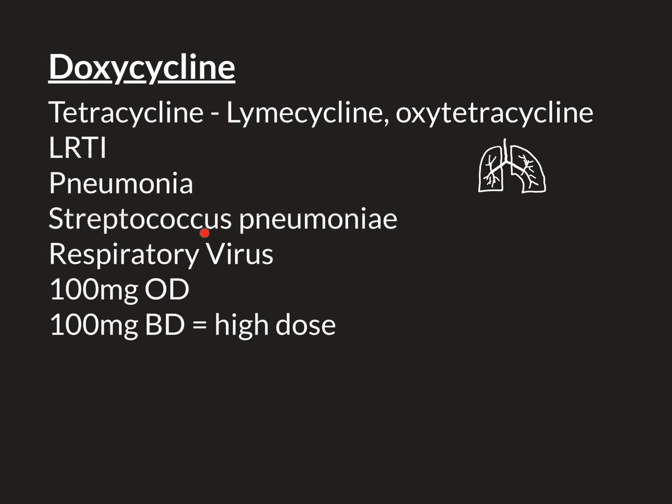Doxycycline is highly effective against Streptococcus pneumoniae and is therefore an excellent antibiotic to treat lower respiratory tract infections and pneumonia. However, it is only available as an oral medicine — usually as a capsule — and there is no intravenous version available. This means doxycycline is only used in people who are quite clinically well despite having these infections. If a patient is extremely unwell — for example, delirious from septic delirium — they may not be compliant with an oral tablet and would need intravenous antibiotics instead, such as intravenous Benpen or intravenous Augmentin.